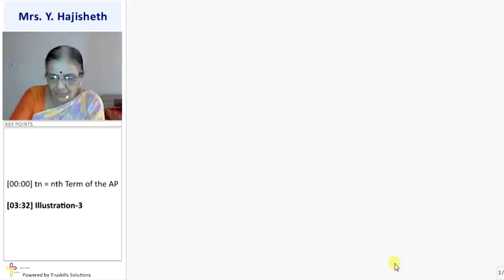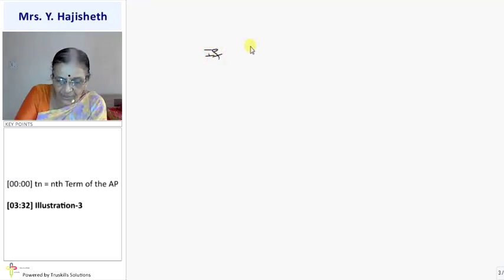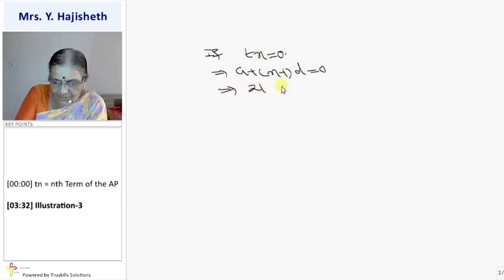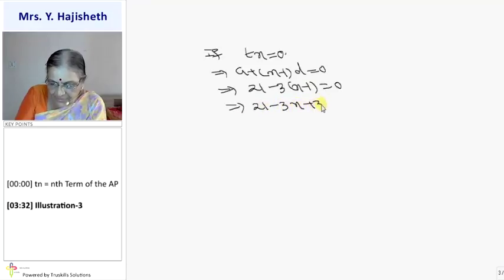Same way, suppose if Tn is 0, okay? Which term is 0? So A plus N minus 1 D is 0. Matlab 21 minus 3 into N minus 1 is 0. Matlab 21 minus 3N plus 3 is 0.